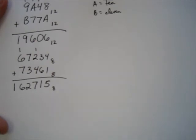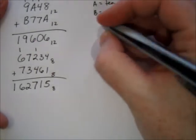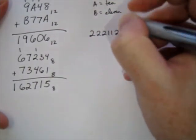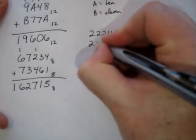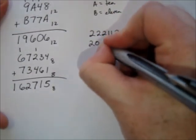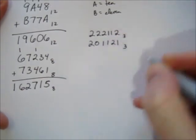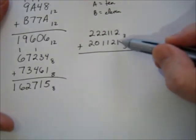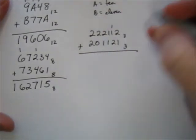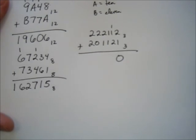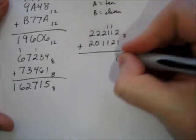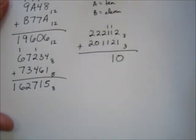I'm going to skip down to problem 6 on your worksheet, because it's still addition. 222112 base 3 plus 201121 base 3. We're going to add those. Alright, 1 plus 2 is 3. If you're in base 3, that's 1 three and none left over. 1 plus 1 is 2, plus 2 is 4, which is 1 three and 1 left over. 1 plus 1 plus 1 plus 1 is 3, 1 three, 0 left over.